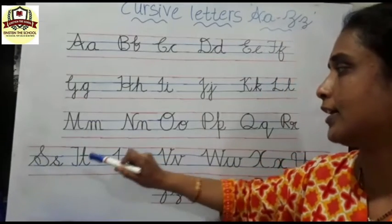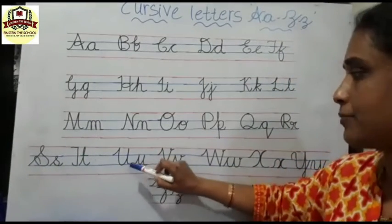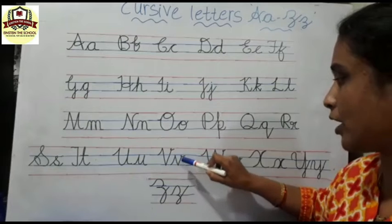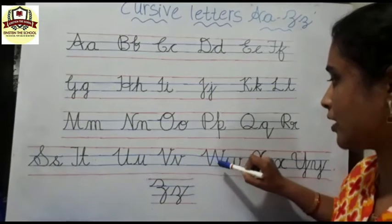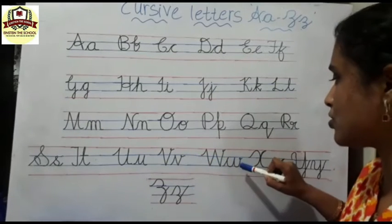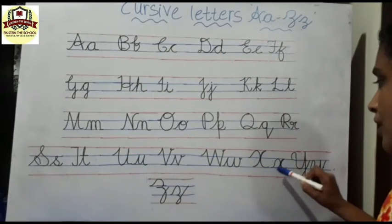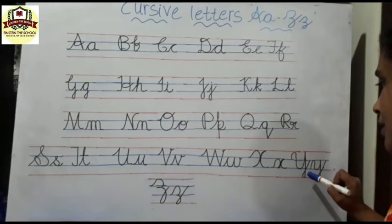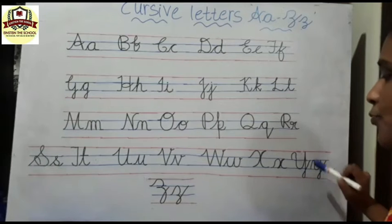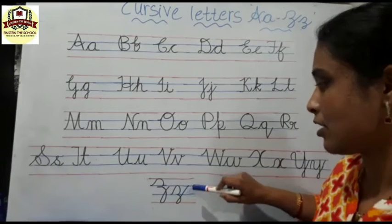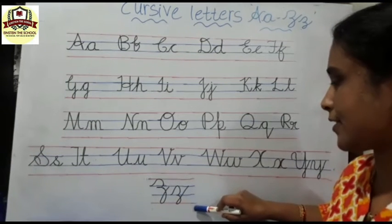Capital T, small t, capital U, small u, capital V, small v, capital W, small w, capital X, small x, capital Y, small y, capital Z and small z.